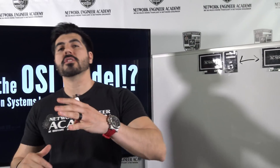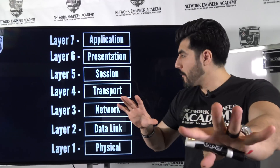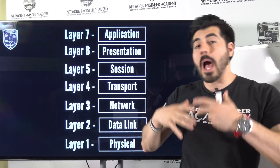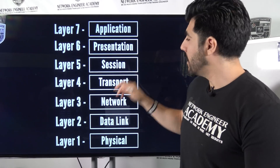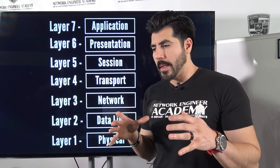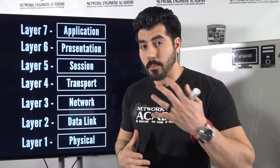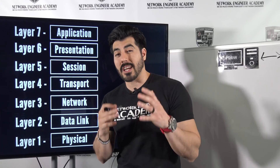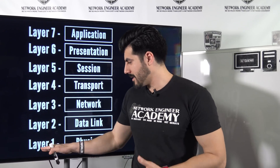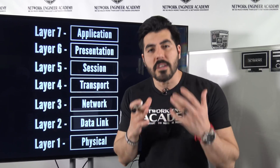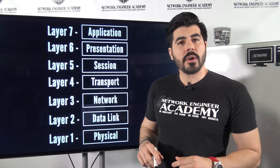So let's go over the seven layers first. We have layer seven — the application layer; layer six — the presentation layer; layer five — the session layer. The more critical layers are layer four — the transport layer; layer three — the network layer; layer two — the data link layer; and layer one — the physical layer.